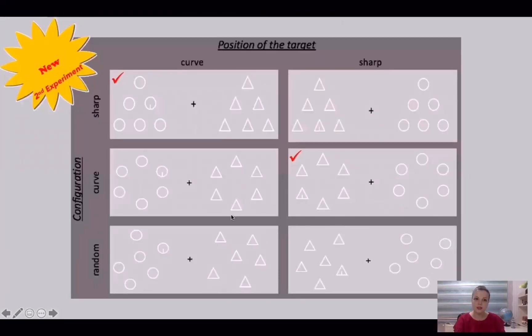These are the new conditions in the second experiment, especially these ones. There is a global and local coherence in the first experiment. It means that small triangles can position to form only a large triangle. However, in the second experiment, they can position to form a large circle.